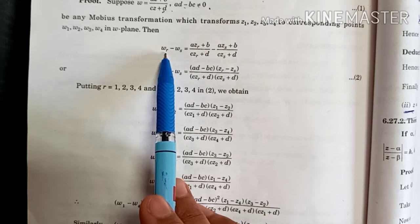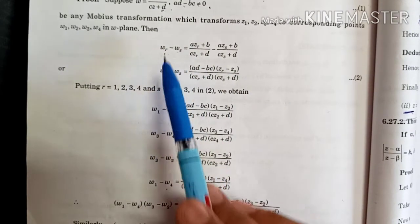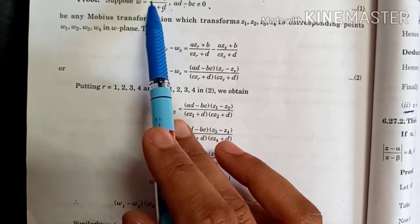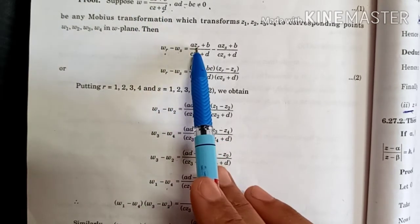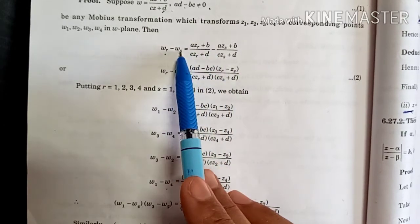General values find out. WR minus WS. What will happen? WR minus WS.